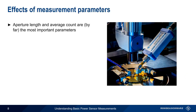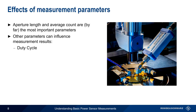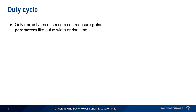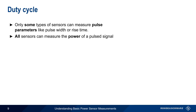Aperture length and average count are, by far, the most important parameters when making RF power measurements, but there are other parameters that can affect our power measurement results. These are duty cycle, smoothing, level offset, and signal frequency. Although only certain types of power sensors can measure the parameters of pulse signals like pulse width or rise time, all power sensors can measure the power in a pulse signal. In order to do this accurately, we need to indicate the percentage of time the pulse signal is on, something usually referred to as the duty cycle.